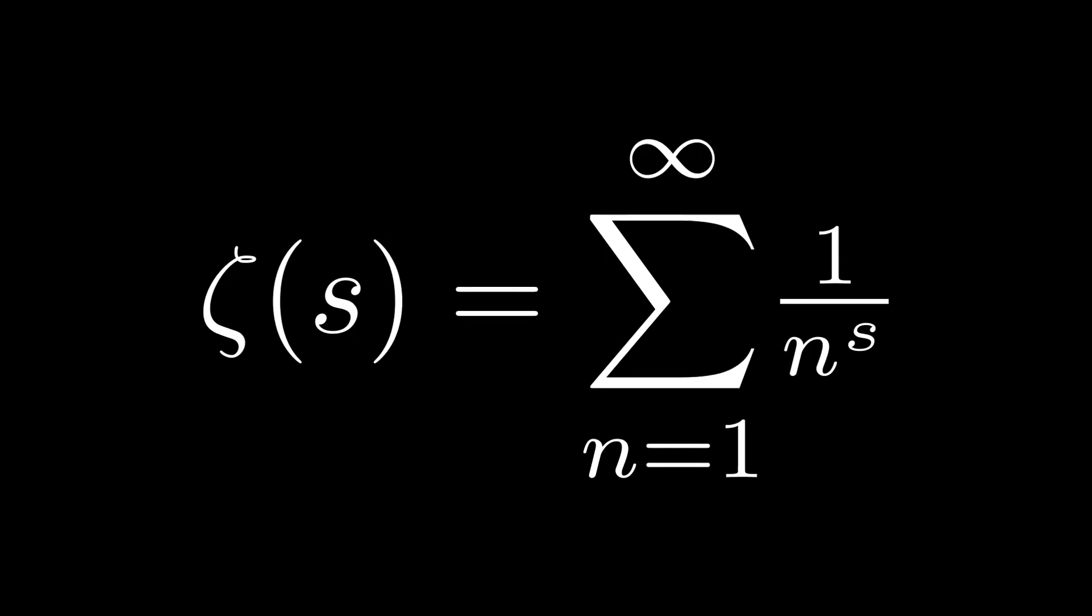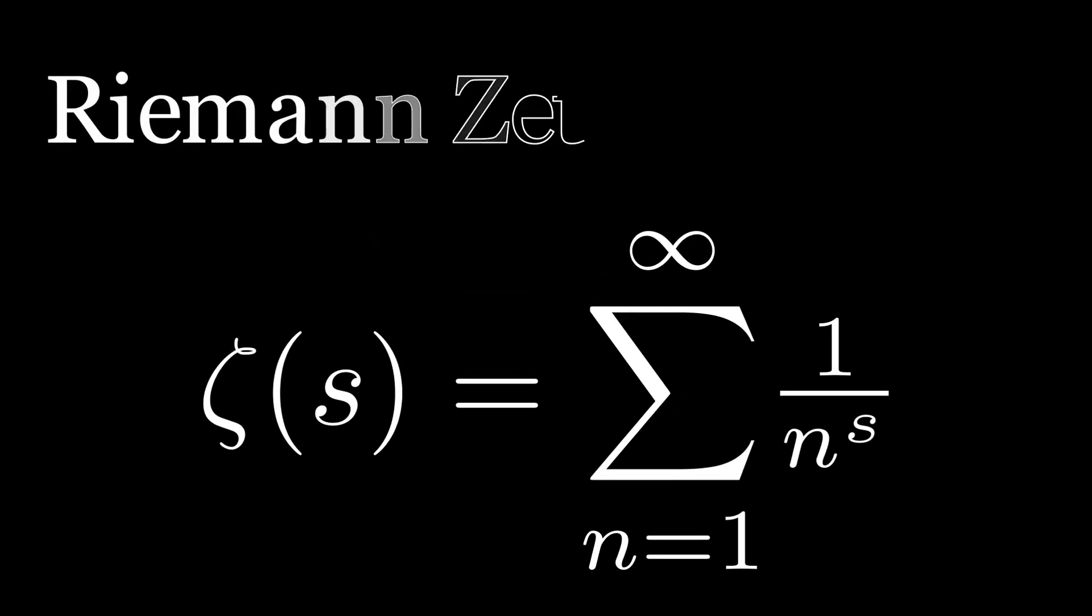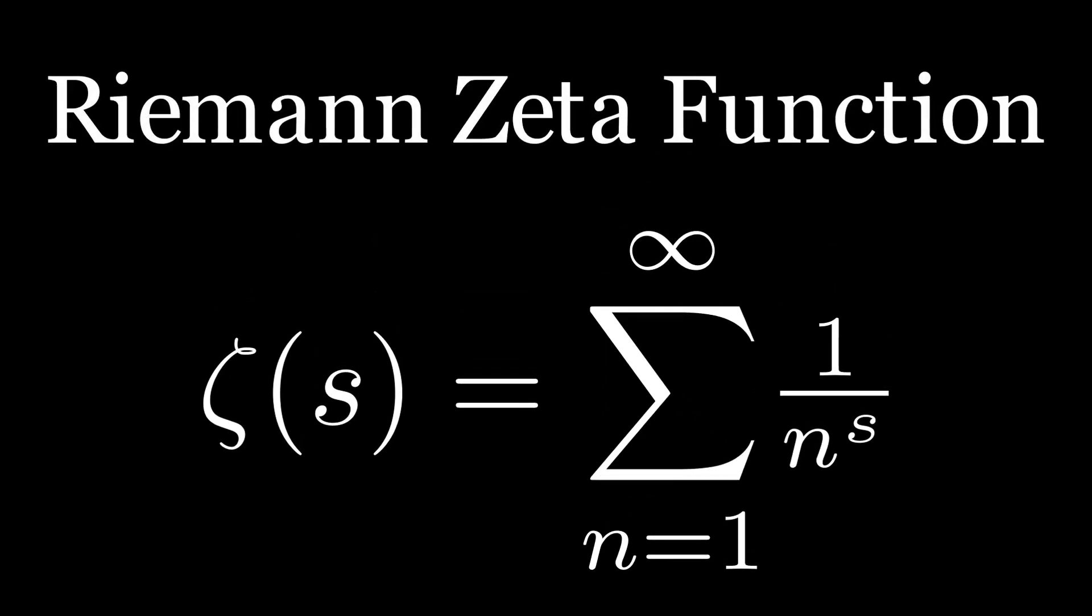Before understanding where these expressions come from, we should start with the basic definition of the zeta function. The Riemann zeta function looks rather simple. It's defined as the infinite sum of the reciprocals of the natural numbers to the power of s.